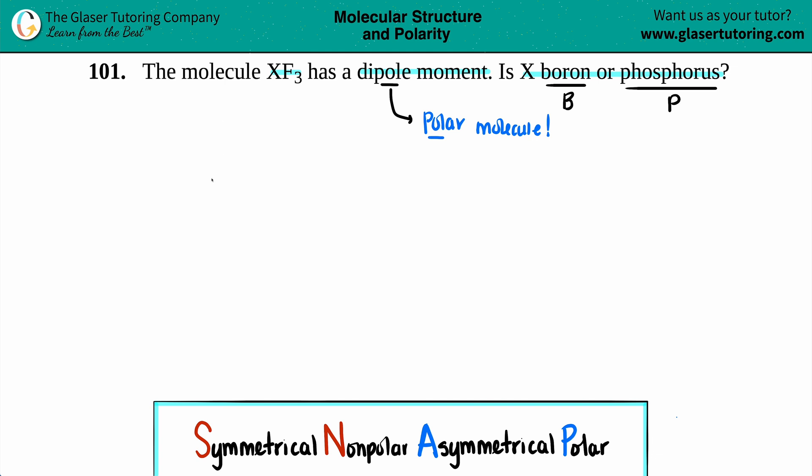So what I'm going to do is I'm going to say, okay, we have BF3, and then we have PF3. We're going to draw the Lewis structure for both of these.